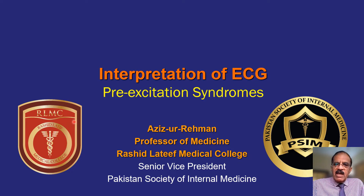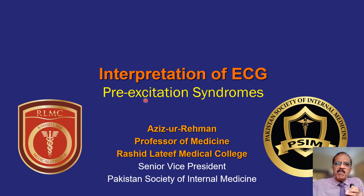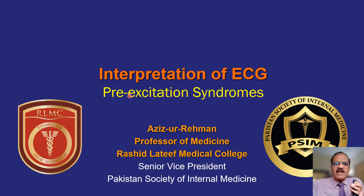In all pre-excitation syndromes there is an anomalous pathway connecting atria and ventricle, providing entry of current into the ventricle prior to the AV nodal current. That is called pre-excitation — it is the depolarization of a portion of the ventricle prior to the depolarization of the entire ventricle.